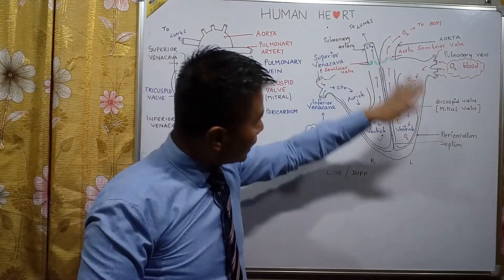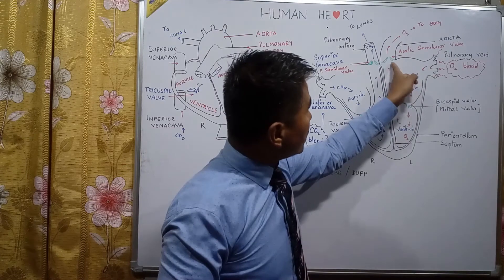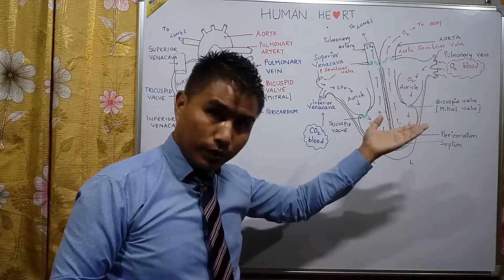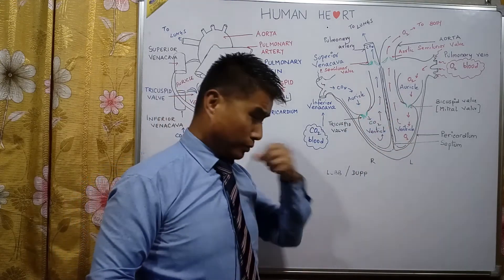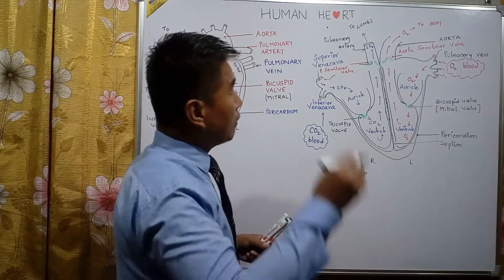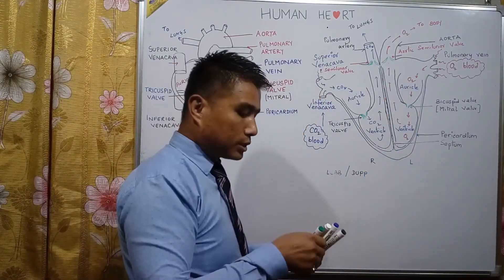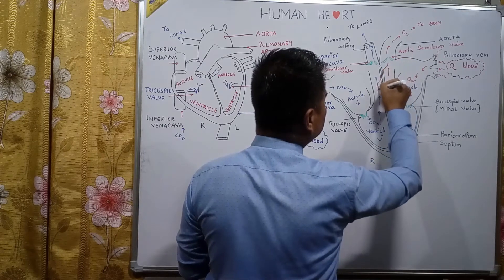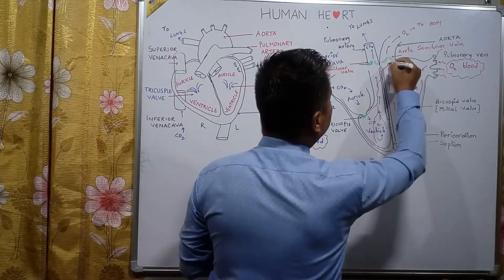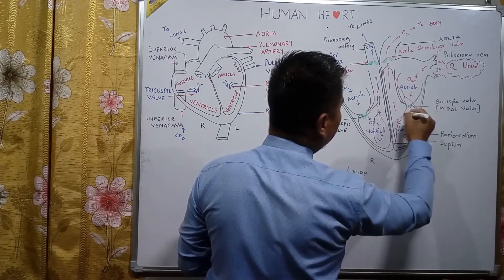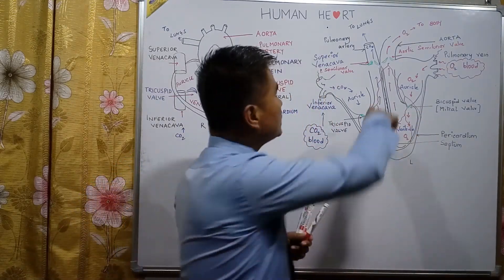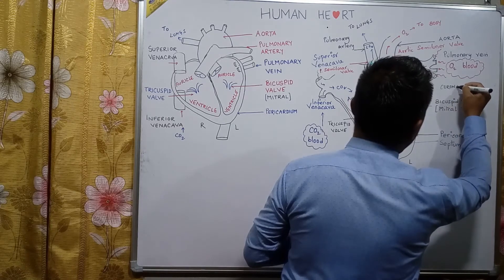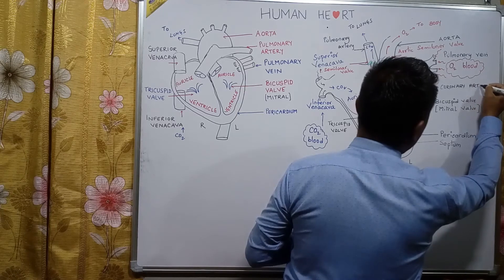The heart acts as a pumping organ supplying oxygenated blood to different parts of the body, but the heart itself also requires oxygenated blood and nutrients for its own cells. From the base of the aorta, two blood vessels arise and supply oxygenated blood to both sides of the heart — these are known as the coronary arteries.